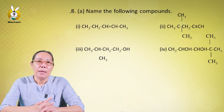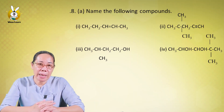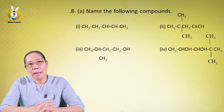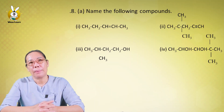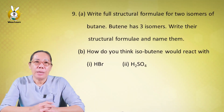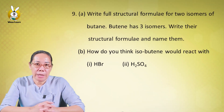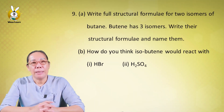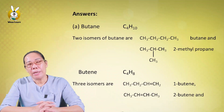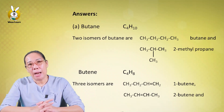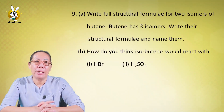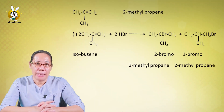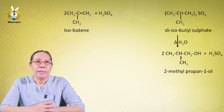Number nine: write the structural formula for two isomers of butene. Butene has three isomers — write the structural formula and name them. How does isobutene react with hydrogen bromide (hydrobromic acid)?